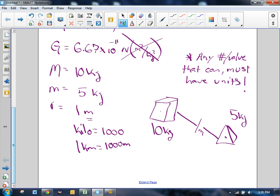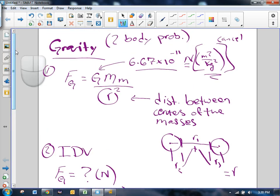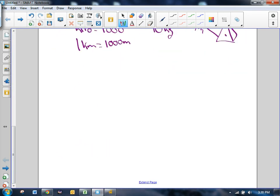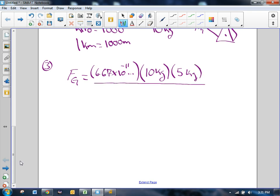Now we have all the variables we need to go ahead and substitute and solve, which is the third step. I'm going to rewrite the formula, but instead of putting in the g, m, m, and r, I'm actually going to put in those values of 6.67 times 10 to the negative 11th, 10 kilograms from the first mass, 5 kilograms second mass, all divided by r squared. And the distance between the centers was 1 meter squared. So really this problem is super easy.